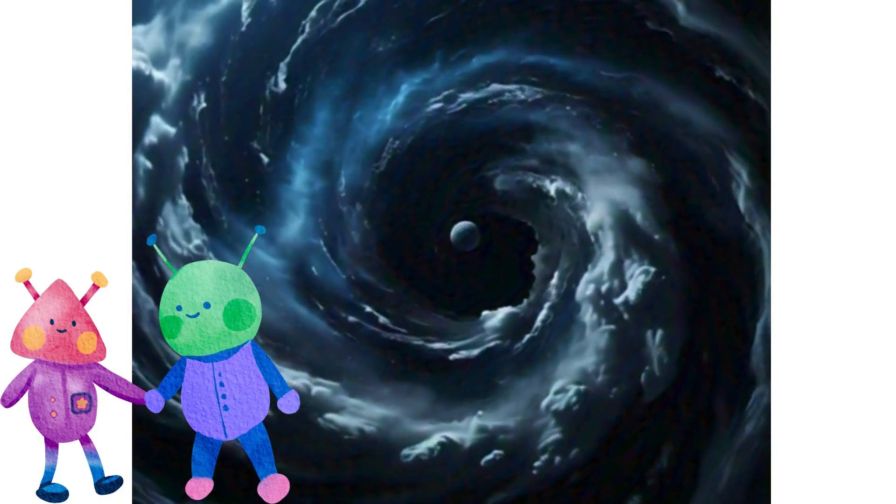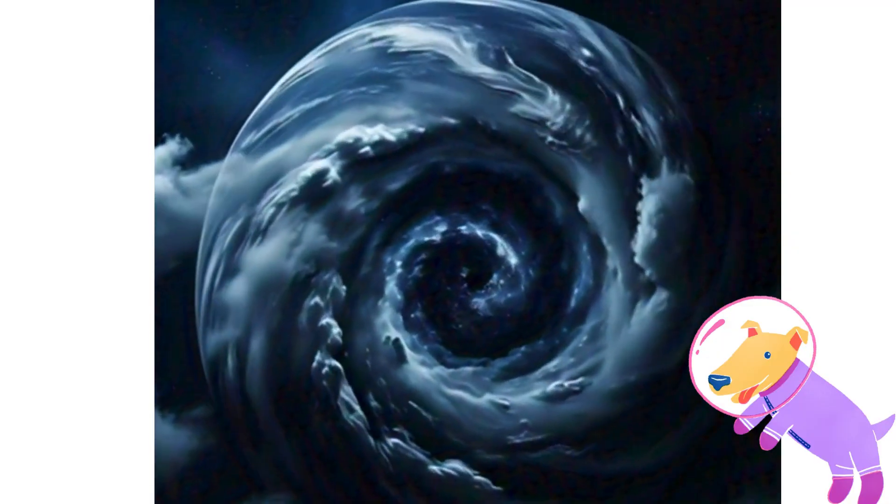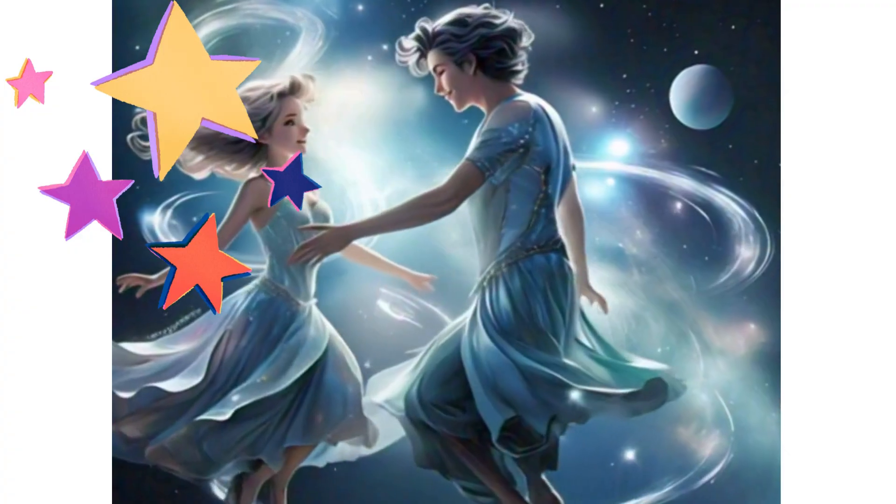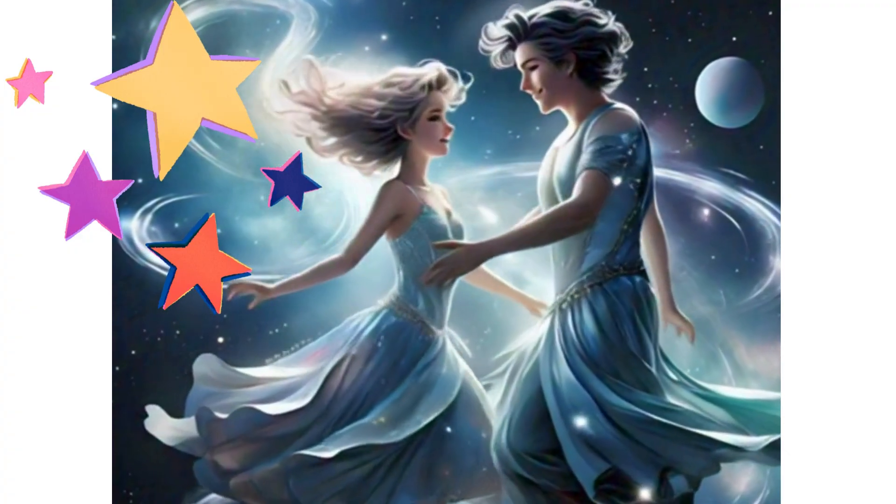The sun is shining, big and bright. It gives us warmth, it gives us light. Now you know the planets all, from big to small, from small to tall.